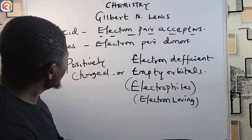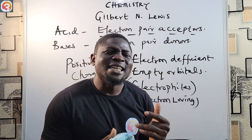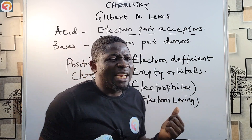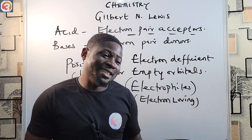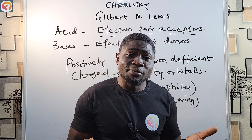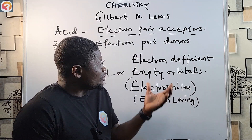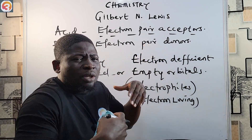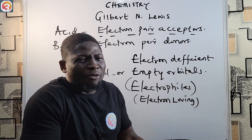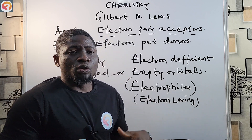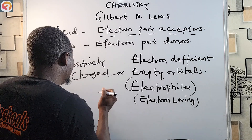On the other hand, the bases are electron pair donors. This means that the bases are rich in electrons — before you can give, you must have. So for them to donate electron pairs, they are first of all rich in electrons and must be willing to give those electrons to positive centers that resemble the nucleus in charge.